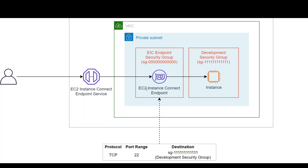Now we know that when a client reaches the EC2 endpoint it will be able to go through the outbound rule to the instance. But what about inbound — how does the client reach the EC2 Instance Connect endpoint? For that you have three options for the inbound rules of the EIC endpoint security group. First, if you know the IP address of your client you can add that IP address, its CIDR range, or even the VPC CIDR range if that is the norm. Normally the best practice is that if you are on a VPN or corporate network, you simply provide the approved CIDR range and connect from there. Once your security group rules are configured correctly, there shouldn't be any problem.